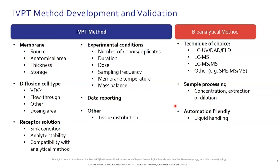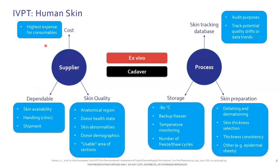Regarding human skin: ex vivo or cadaver skin can both be used. When we talk about ex vivo skin, we are generally considering skin sourced from elective surgeries — abdominoplasty, for instance, tends to be fairly common. Cadaver skin is pretty self-explanatory. Those are the two main types typically used.